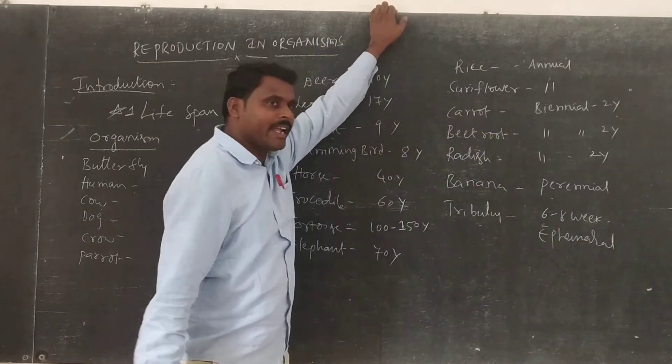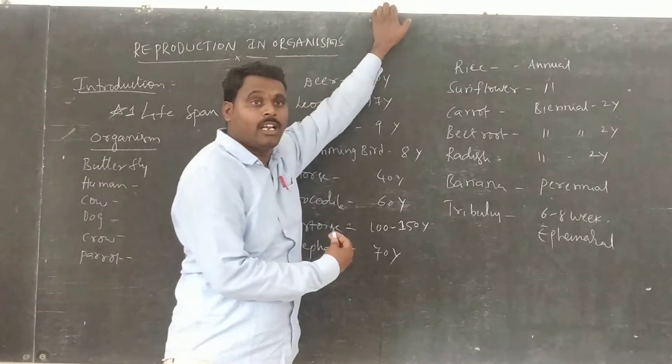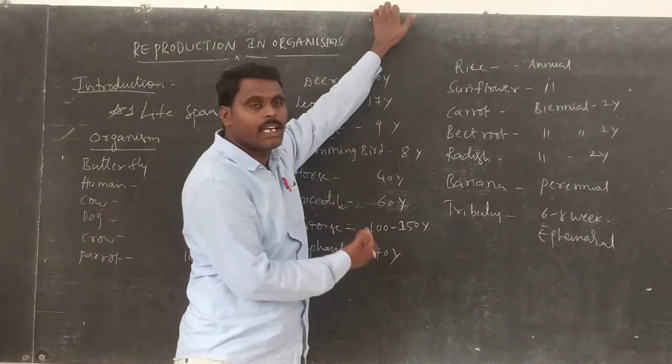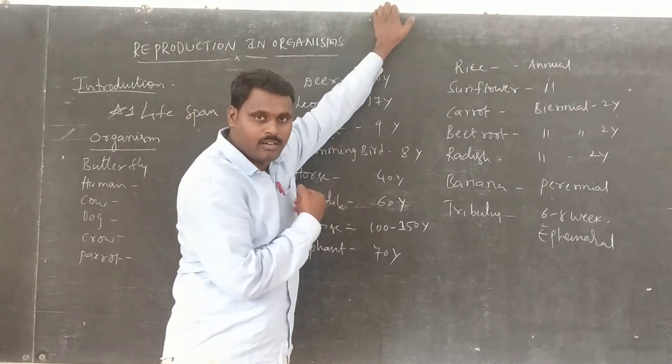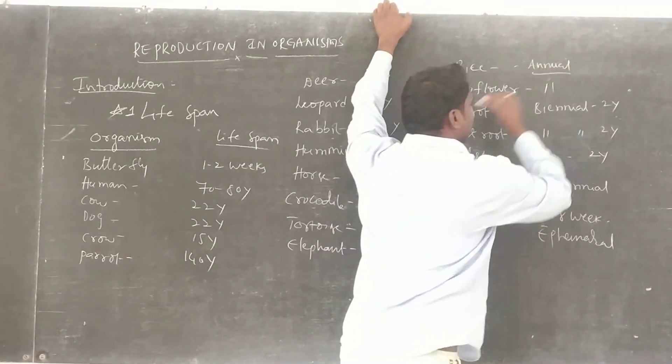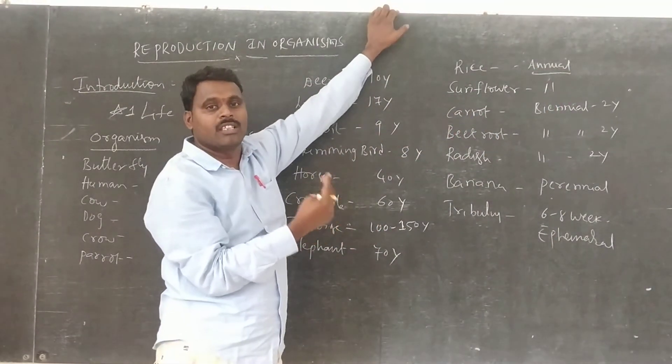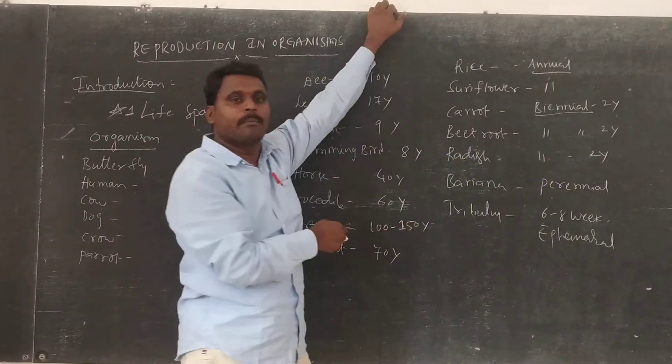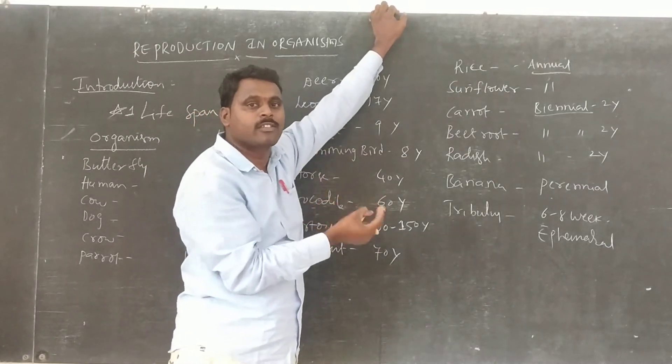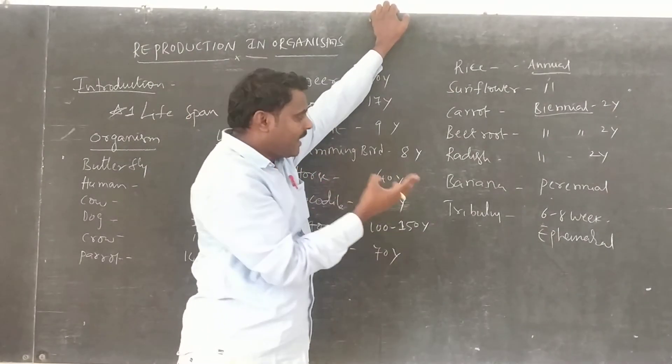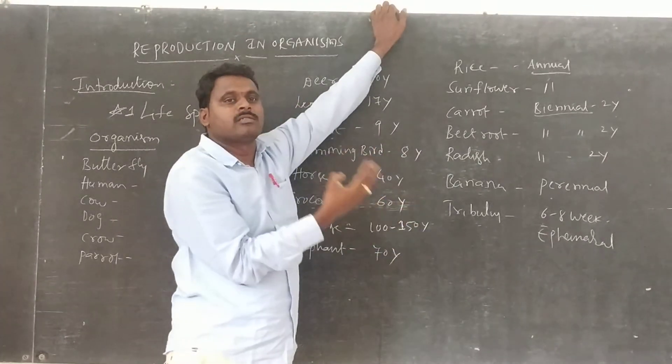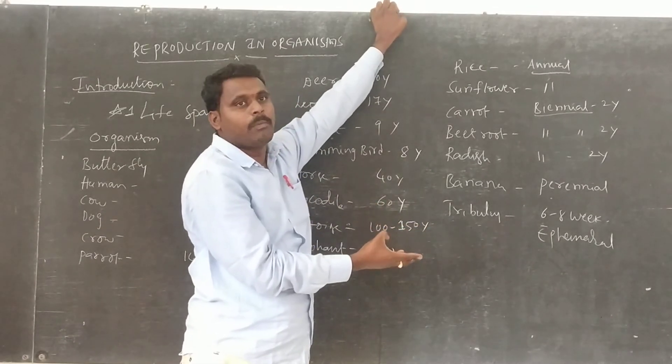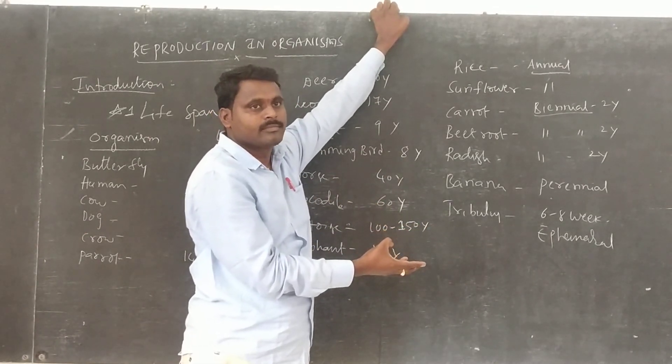What is this ephemeral plant? The plants which can complete their life cycle within 6 weeks are called ephemeral plants. What about annual? The plants which can complete their life cycle within 1 year are called annual plants. What about biennial? The plants which can complete their life cycle within 2 years are called biennial plants. And what about perennial plants? The plants which can complete their life cycle over several years are called perennial plants.